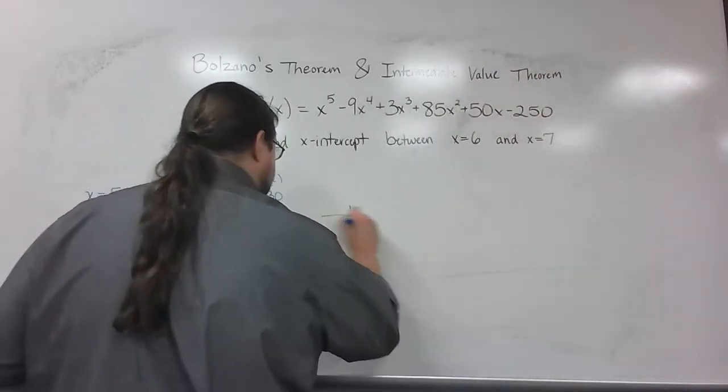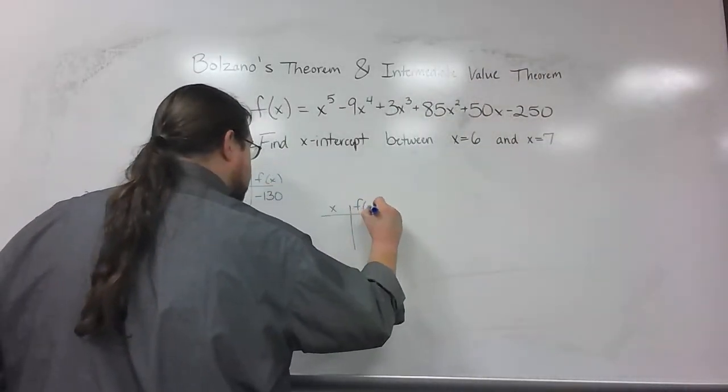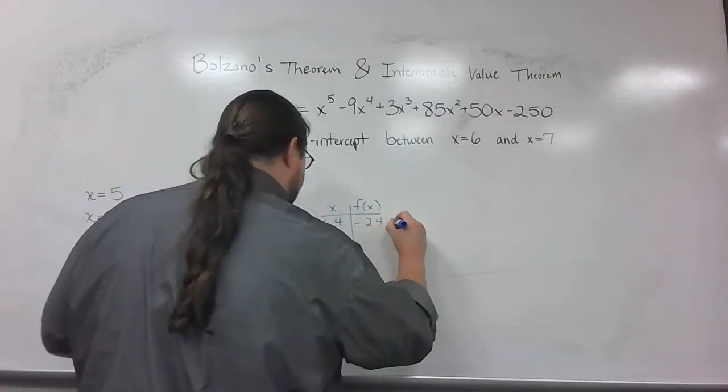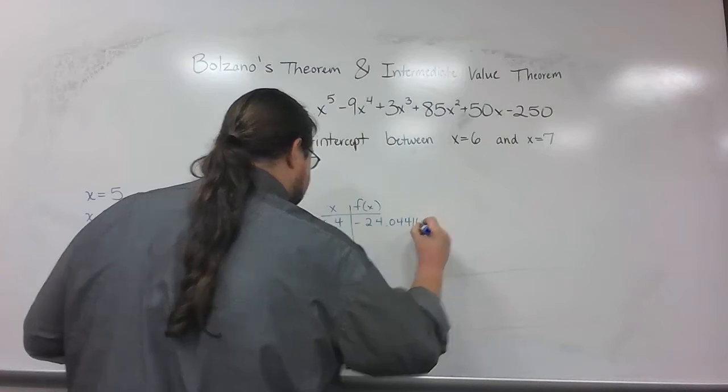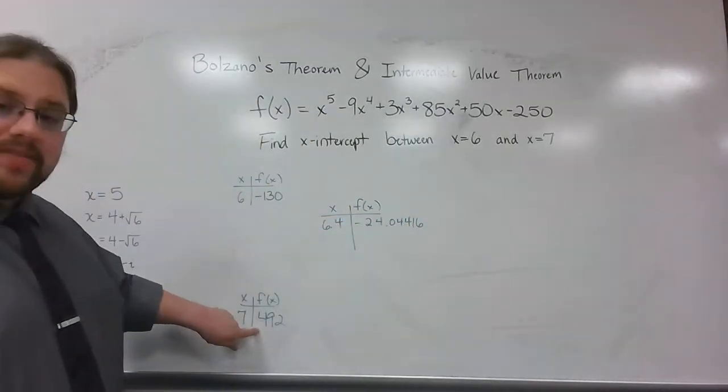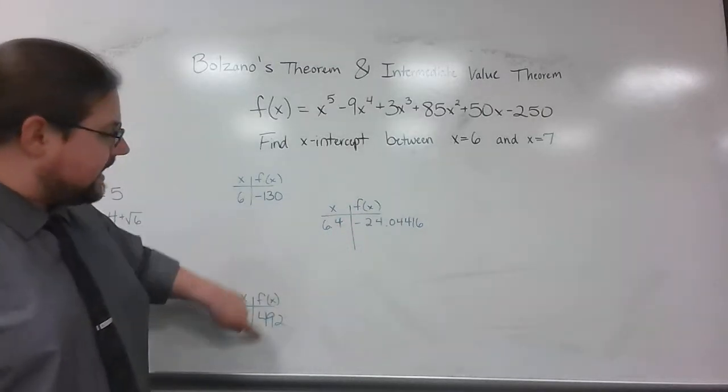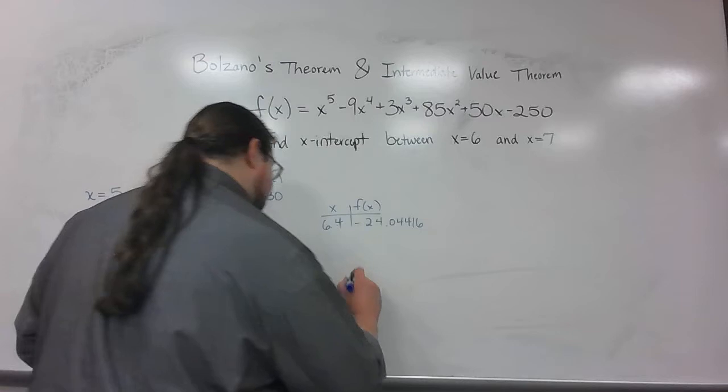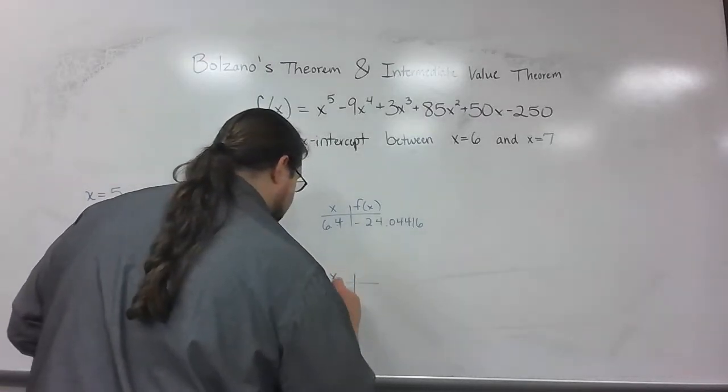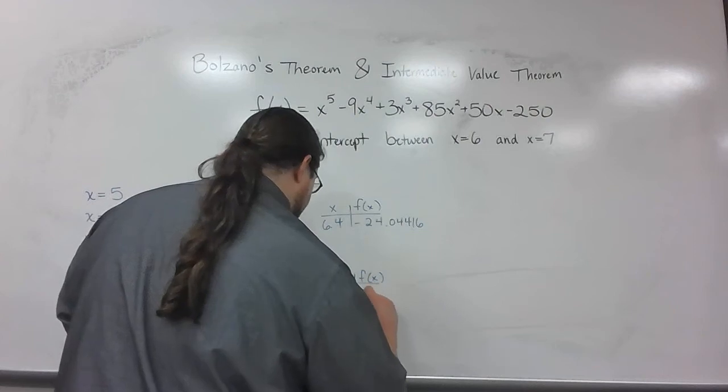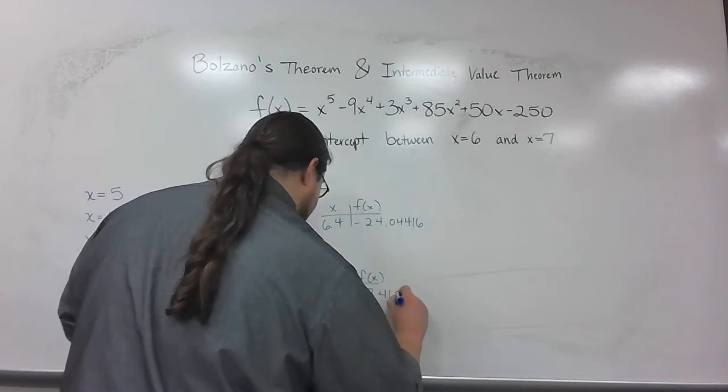When I plugged in 6.4, it gave me negative 24.04416. Now, since this is a negative number and that's a positive number, I know it's going to be somewhere in here. So another number that I tried was 6.5 to see what happened. When I plugged in 6.5, I got 27.46875.